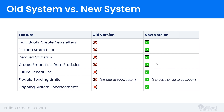Future scheduling — another huge quality-of-life update. With the old system, if you wanted to send a newsletter at 6am tomorrow, you'd have to wake up and manually click send at that time. Now you'll be able to draft your newsletters in advance, select the recipients, and schedule when you'd like them to be sent out — much more convenient.